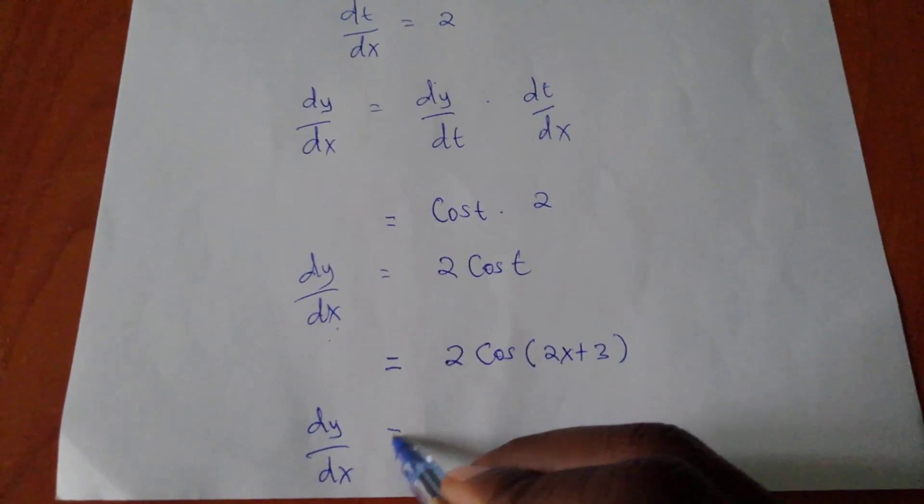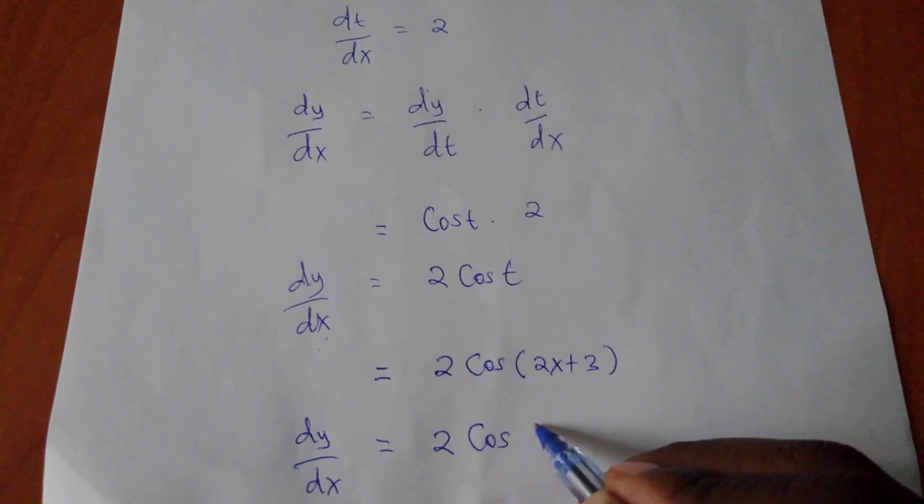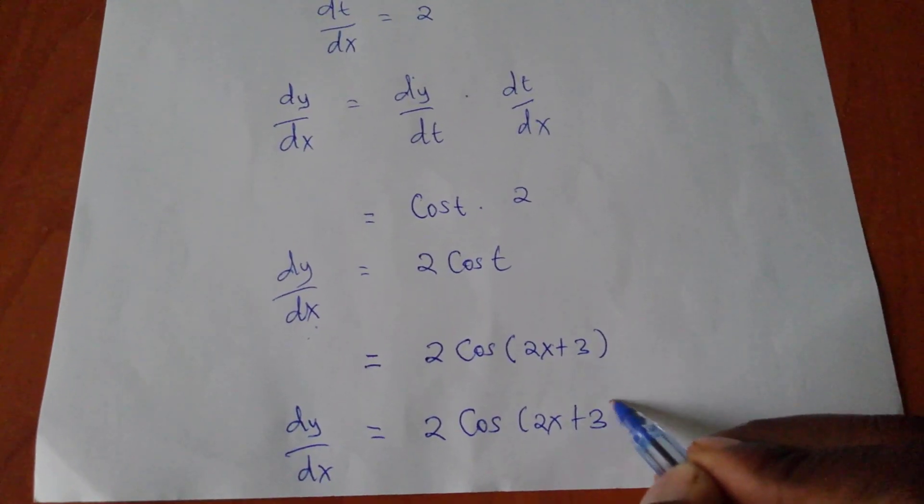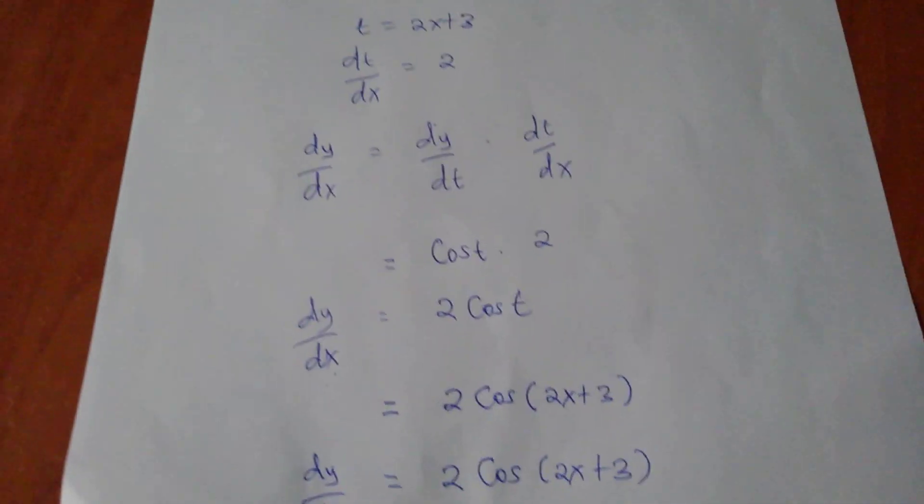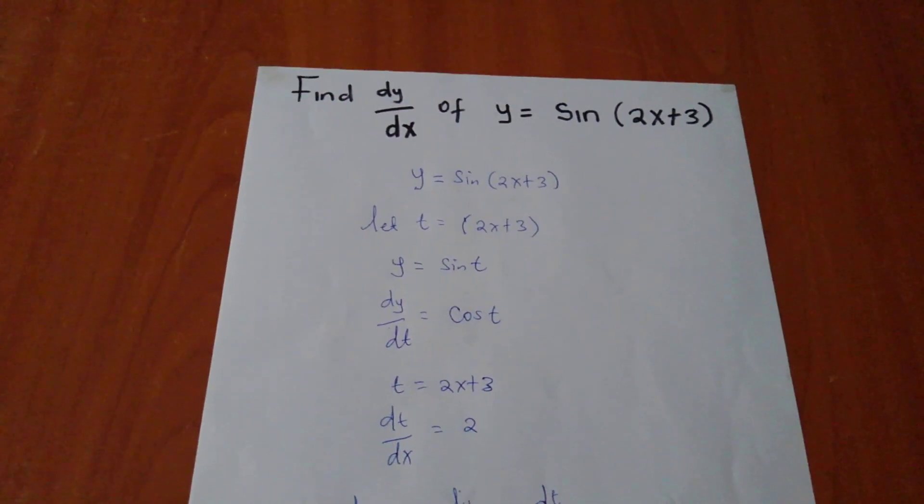So my final answer dy/dx is equal to 2 cos of 2x plus 3. Please like, subscribe, comment for the growth of the channel. Thank you very much.